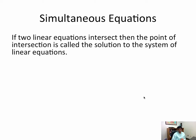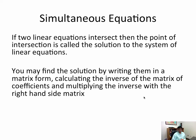If two linear equations intersect, then the point of intersection is called the solution to the system of linear equations. One way to find the solution is by writing them in matrix form, calculating the inverse of the coefficient matrix, then multiplying the inverse with the right-hand side matrix.